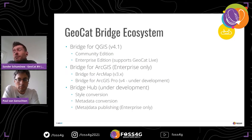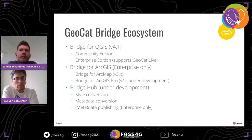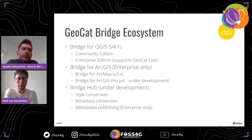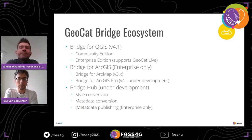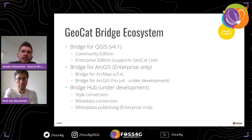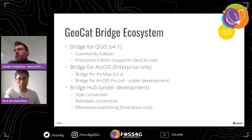The ArcGIS Pro plugin has not been released yet — that will probably be shortly before Christmas or maybe after, not sure yet. I think it was at the FOSS4G Bucharest edition where the first Bridge for QGIS was revealed — that was version 4. Last August we released version 4.1, both for the community edition and the enterprise edition, which also supports GeoCat Live, our hosted solution for enterprise users, so you can publish to GeoNetwork and GeoServer.